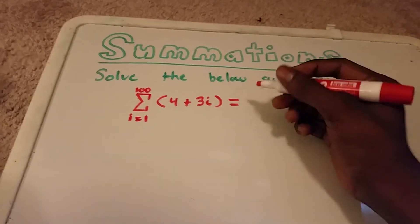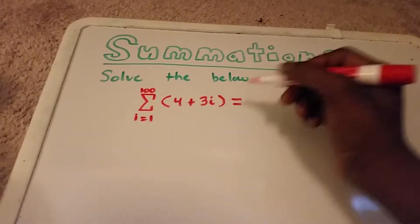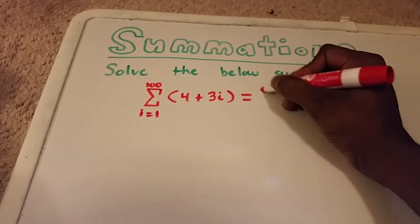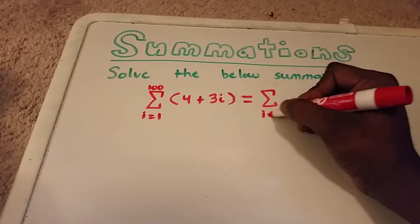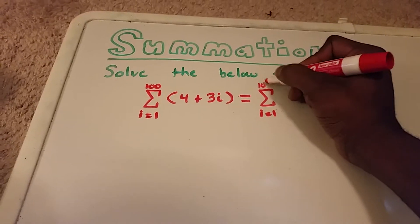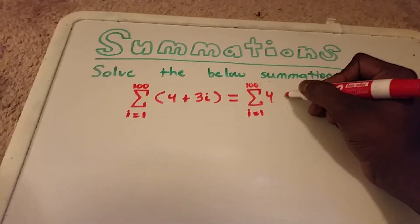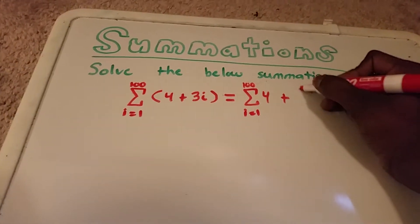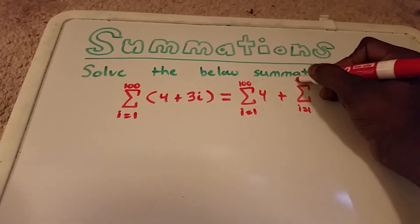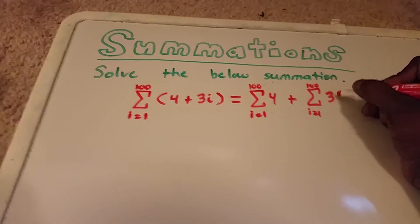So to start off, we'll be rearranging this and moving over the summation. We split it into the sum from i equals 1 to 100 of 4, plus the sum from i equals 1 to 100 of 3 times i.